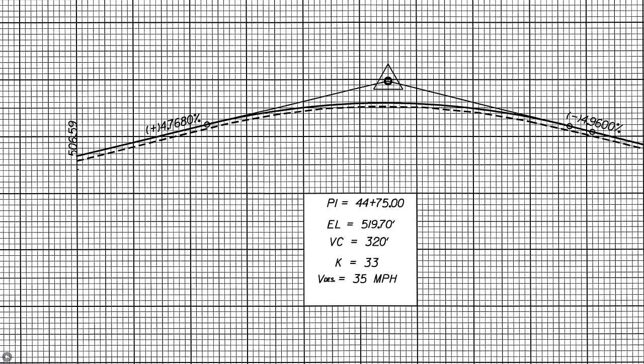The design speed from our earlier horizontal alignment is confirmed here as 35 miles per hour. We can also see an entrance grade of positive 4.768 percent and an exit grade of negative 4.96 percent — a downhill grade. That covers the core information for vertical curves.